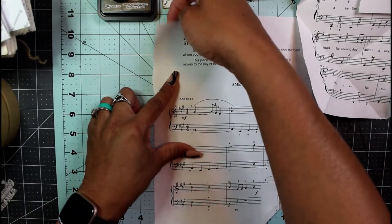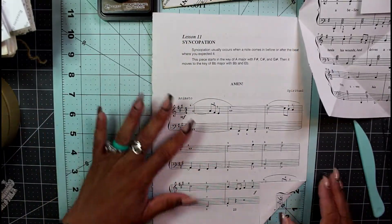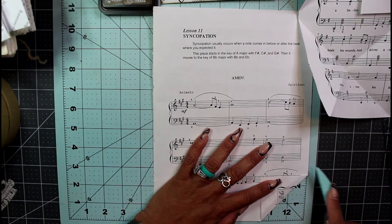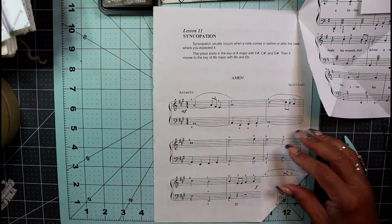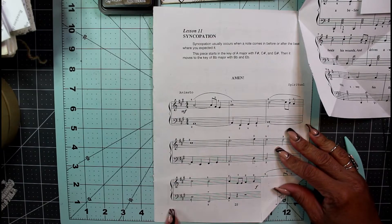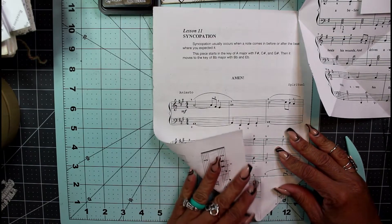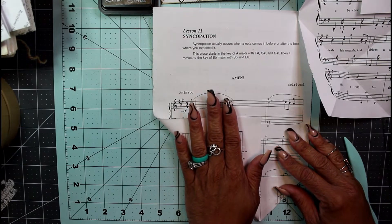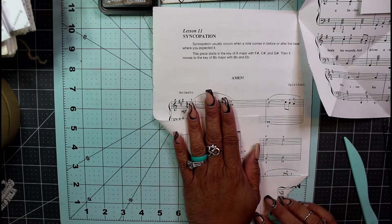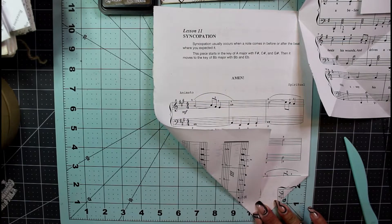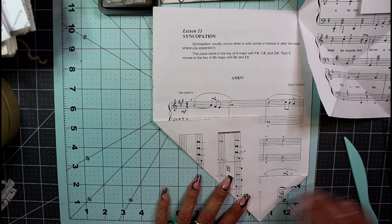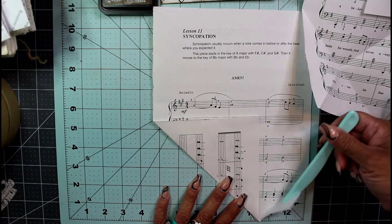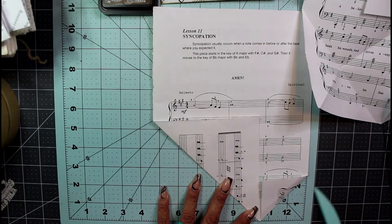Once you crease this right here at two or two and a half inches, you then want to take this bottom section over here and fold it in. I'm just leaving about a quarter of an inch, maybe a little less than a quarter of an inch gap between this flap and this flap.